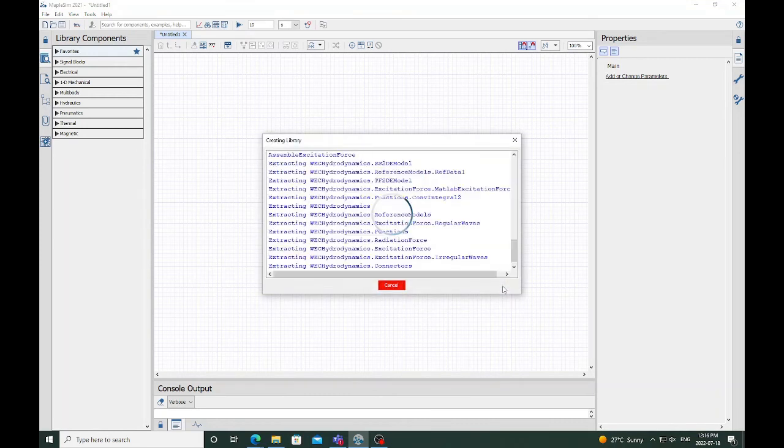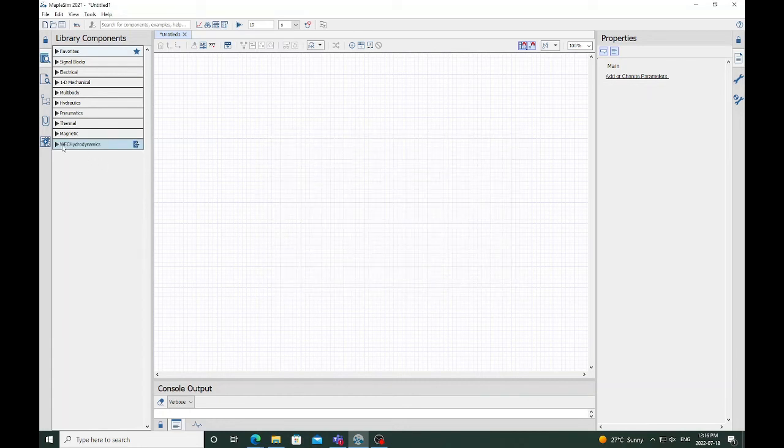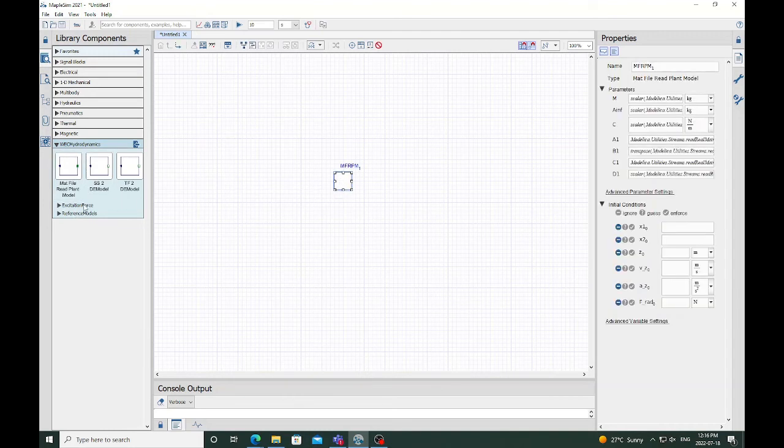This example looks at a floating hollow cylinder part of Sandia's reference model 3. The reference structure has been saved in an external file and the import component looks to retrieve and parse this data.